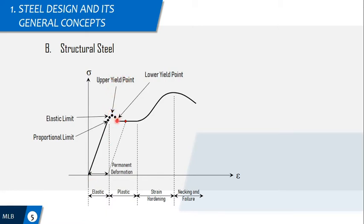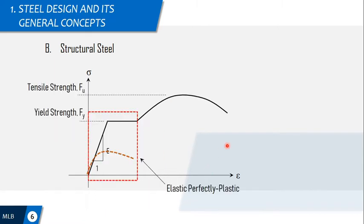Now, there's upper yield point and lower yield point. If you reach this stress in this portion, once you unload the member, there will be permanent deformation. I guess you're okay with this stress-strain curve for structural steel. Elastic, plastic. This is termed as strain hardening, and then necking and failure.